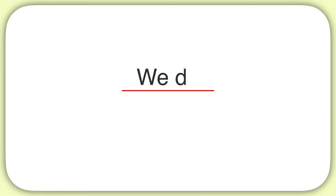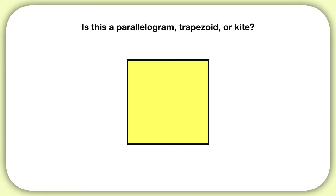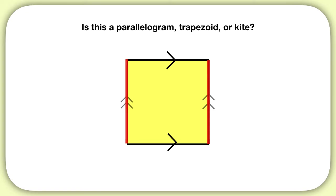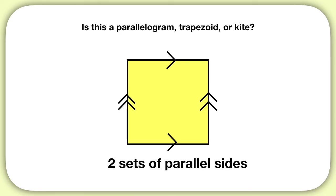Now let's practice one of these together. Is this a parallelogram, trapezoid, or kite? First we can ask ourselves: are these two lines parallel? Yes, these two lines are parallel — they move in the same direction. Are there any other parallel sides on this shape? You can see these two sides are also parallel to each other. So this shape has two sets of parallel sides. Two sets of parallel sides means this is a parallelogram.